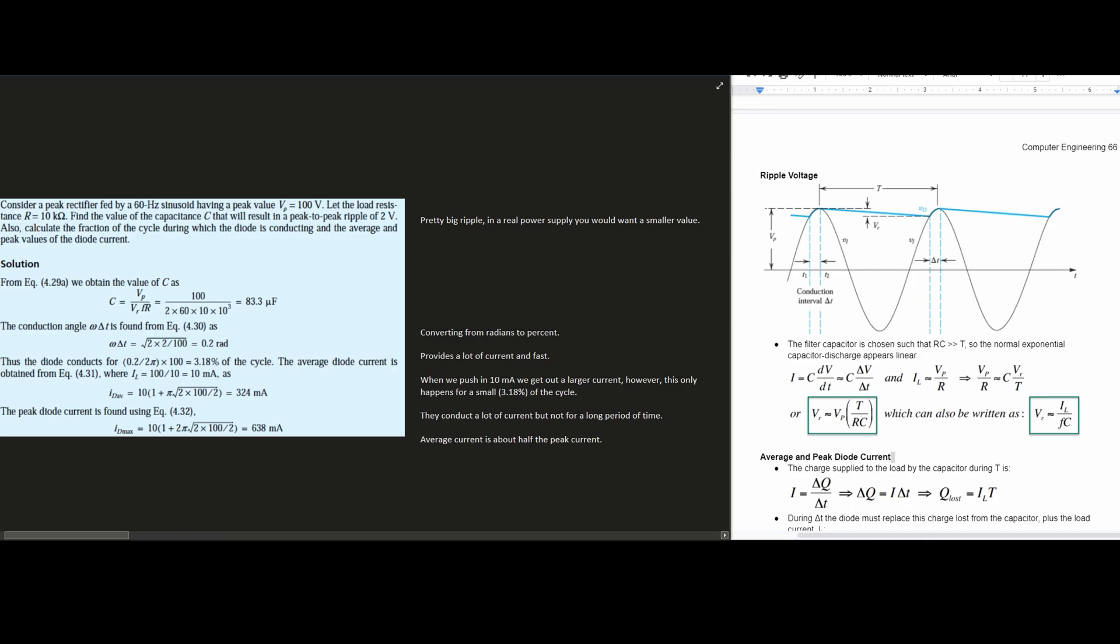For this question, we're asked to consider a peak rectifier fed by a 60 Hertz sinusoidal having a peak value Vp equal to 100 volts. We'll come back to this 100 volts later because we're going to have to use it in our equation.